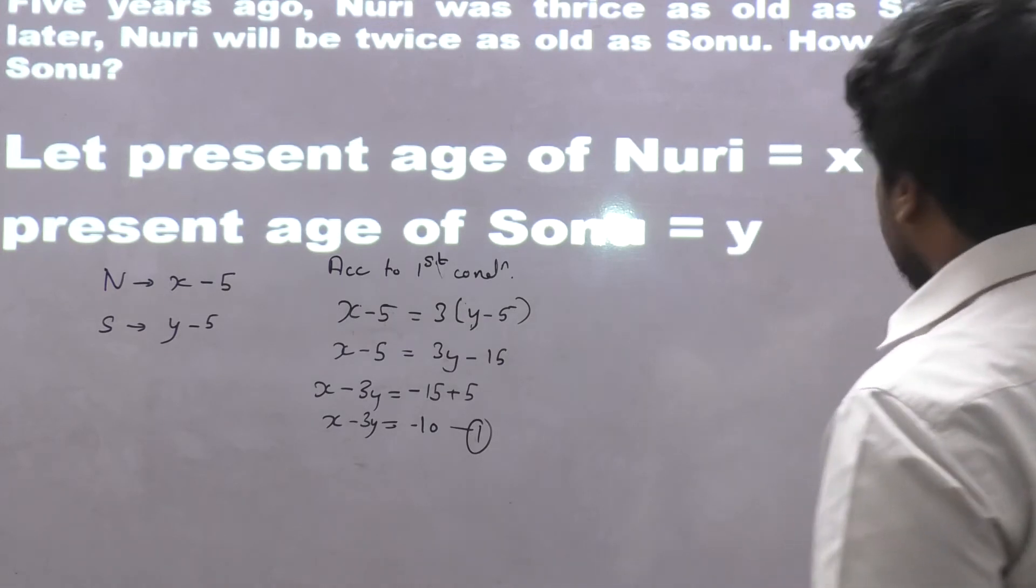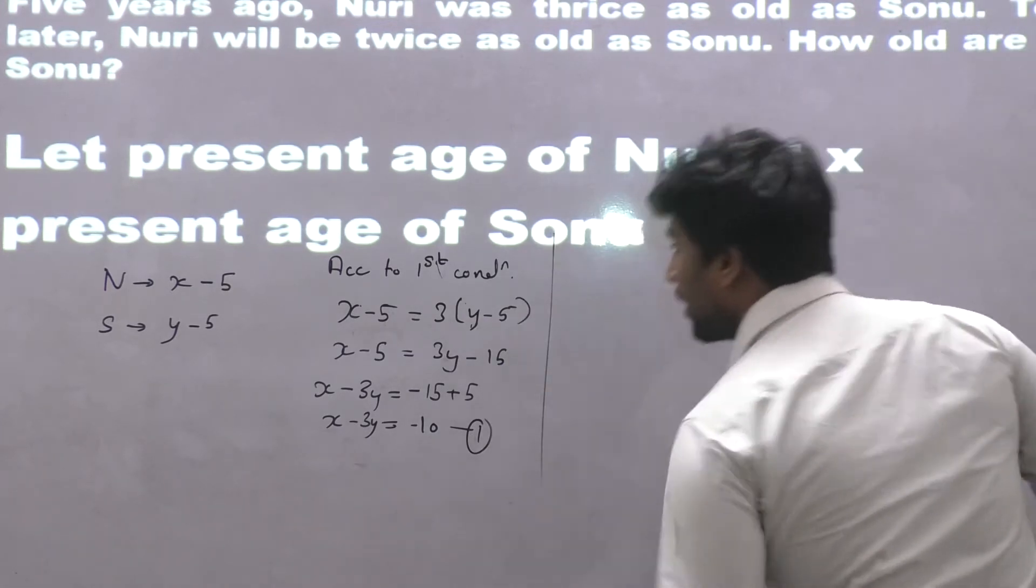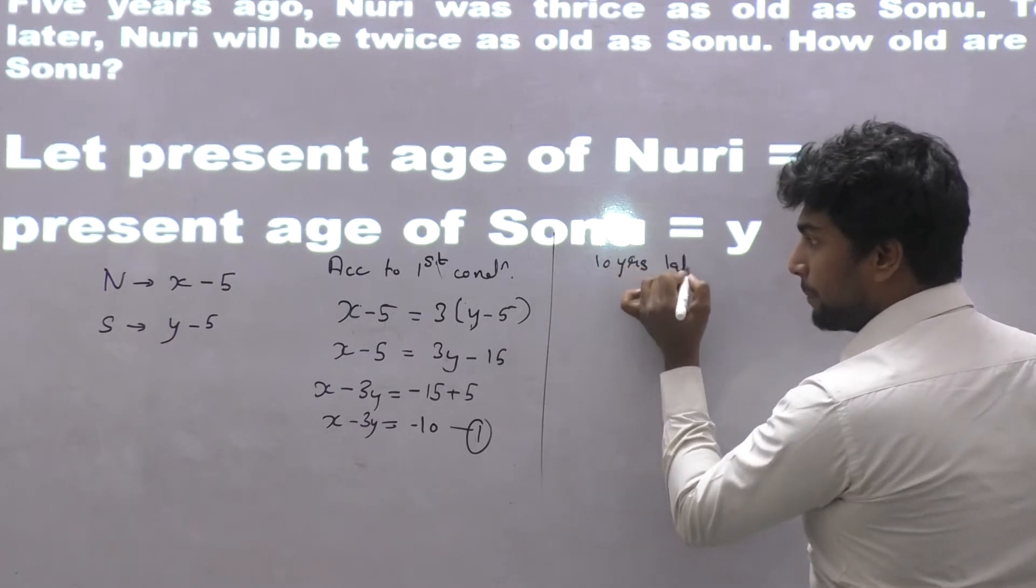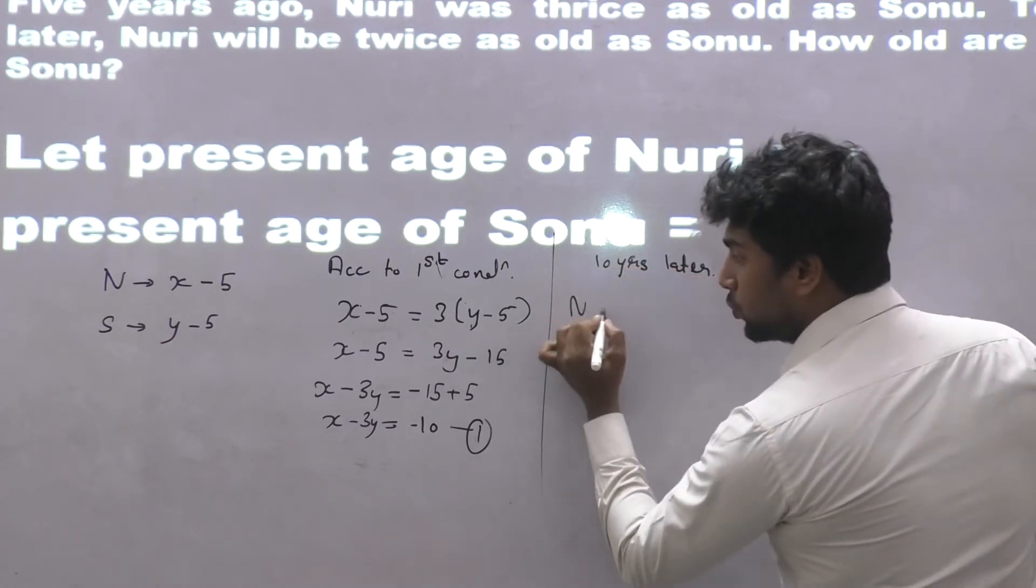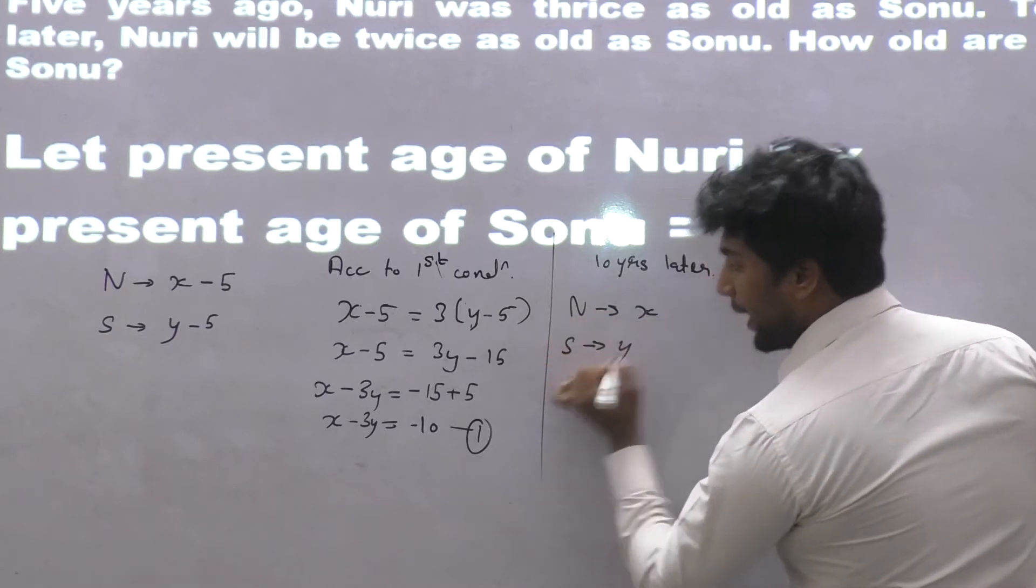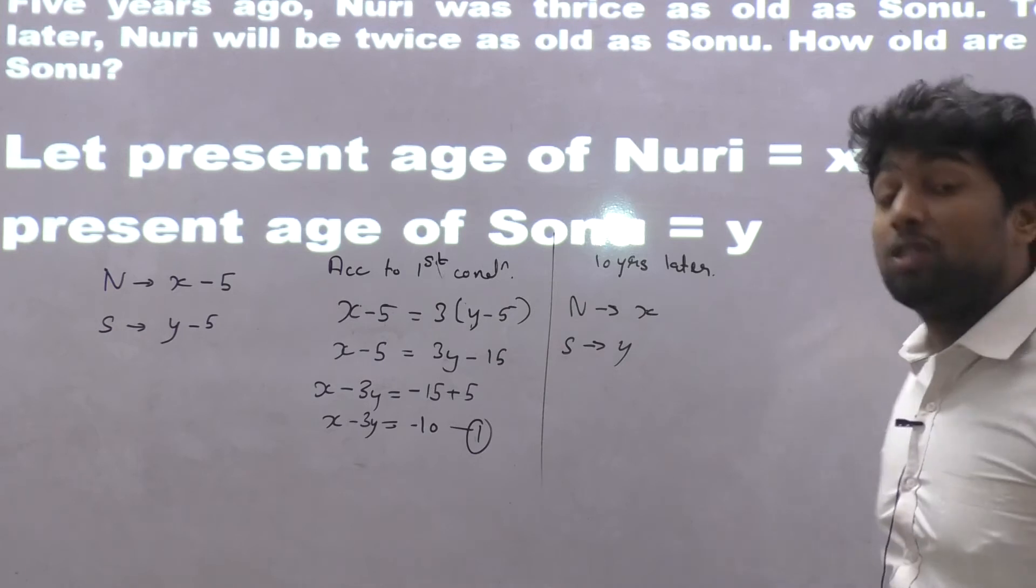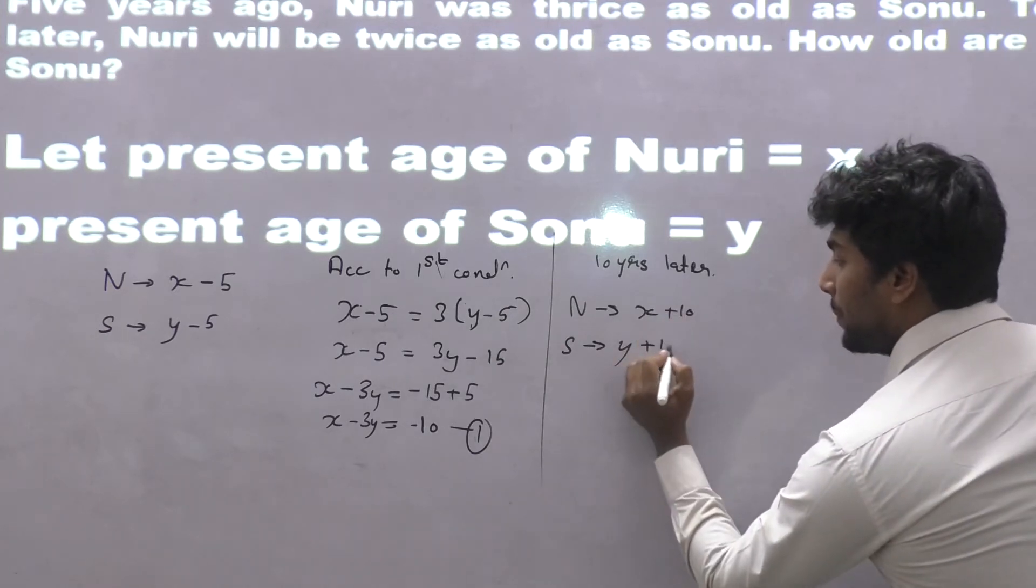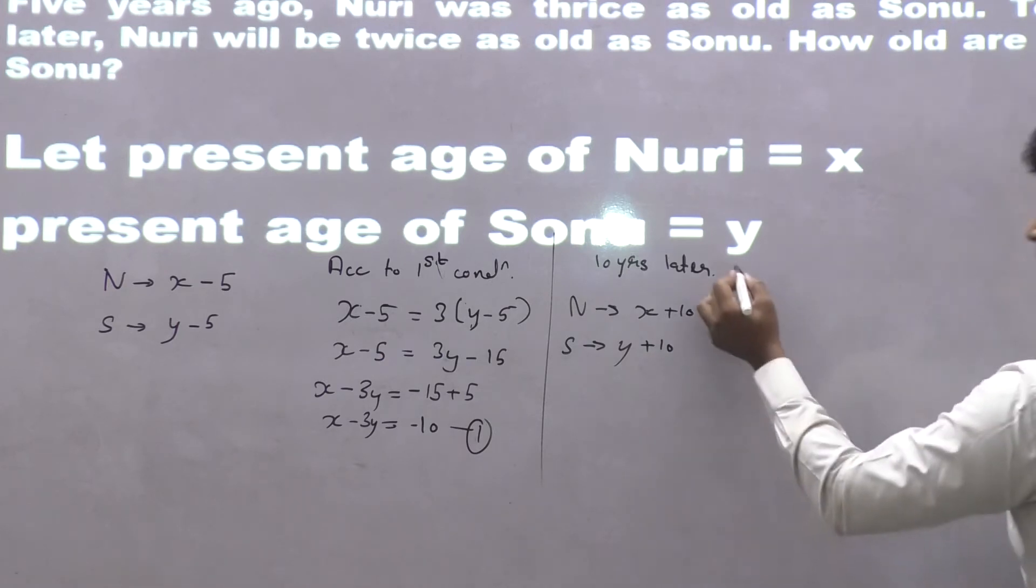10 years later! Today Nuri's age is x, and today this is the present age. 10 years later, x plus 10 and y plus 10. So according to the second given condition: